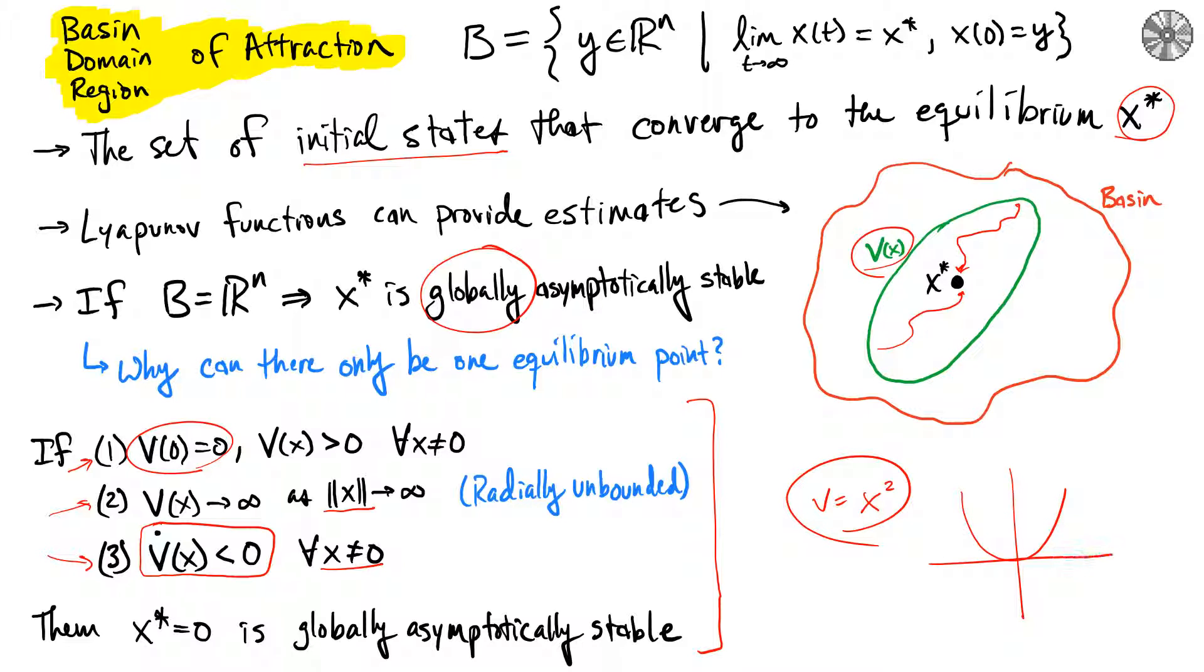that as you head further and further in either direction, either towards the minus direction of x or positive direction of x, V(x) just gets bigger and bigger. So if we have these